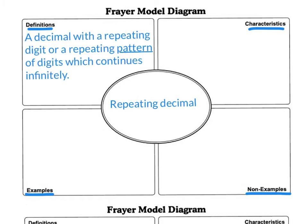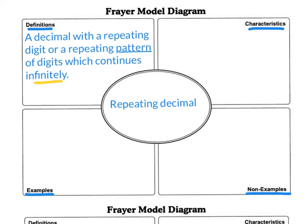So as a definition for repeating decimal, we can say it is a decimal with a repeating digit or a repeating pattern of digits, which continues infinitely. That means it goes on forever.